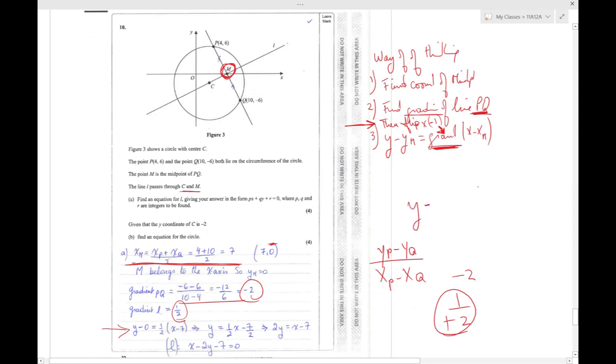So you take the half and you replace it in here: Y minus Y of M, which is 0, equals half into X minus X of M, which is 7. From here onwards it's algebra. Y equals half X minus 7 over 2.